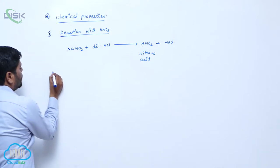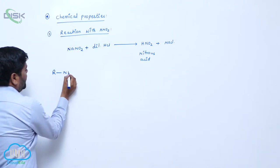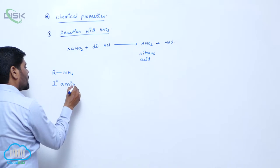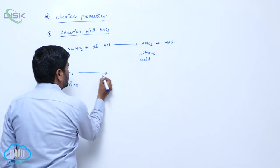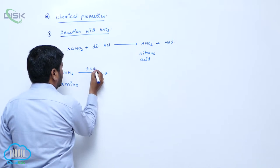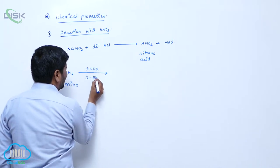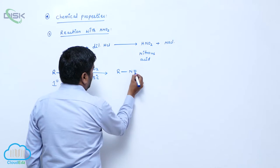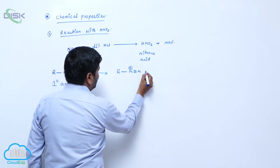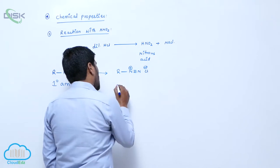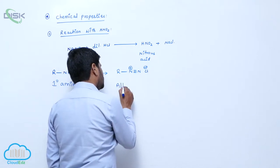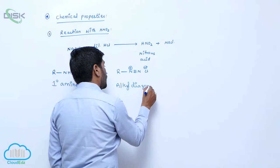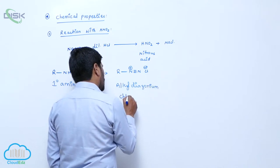Primary Amine. When Primary Amine reacts with Nitrous Acid at 0 to 5 degree centigrade, it forms R-N≡N+ with Cl- known as Alkyldiazonium Chloride.